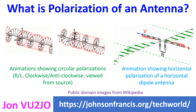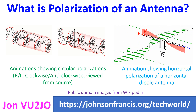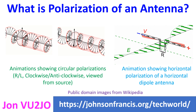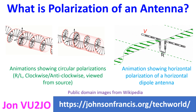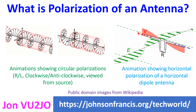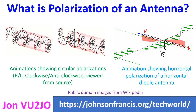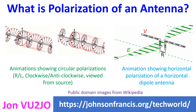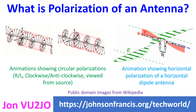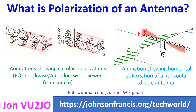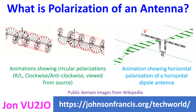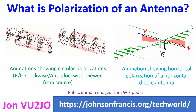Polarization of an antenna is the direction of the electric field produced by the antenna. This determines the direction of transmission and reception. Usual antennas have linear polarization, which could be vertical or horizontal depending on the plane in which the electrical field of the antenna oscillates.